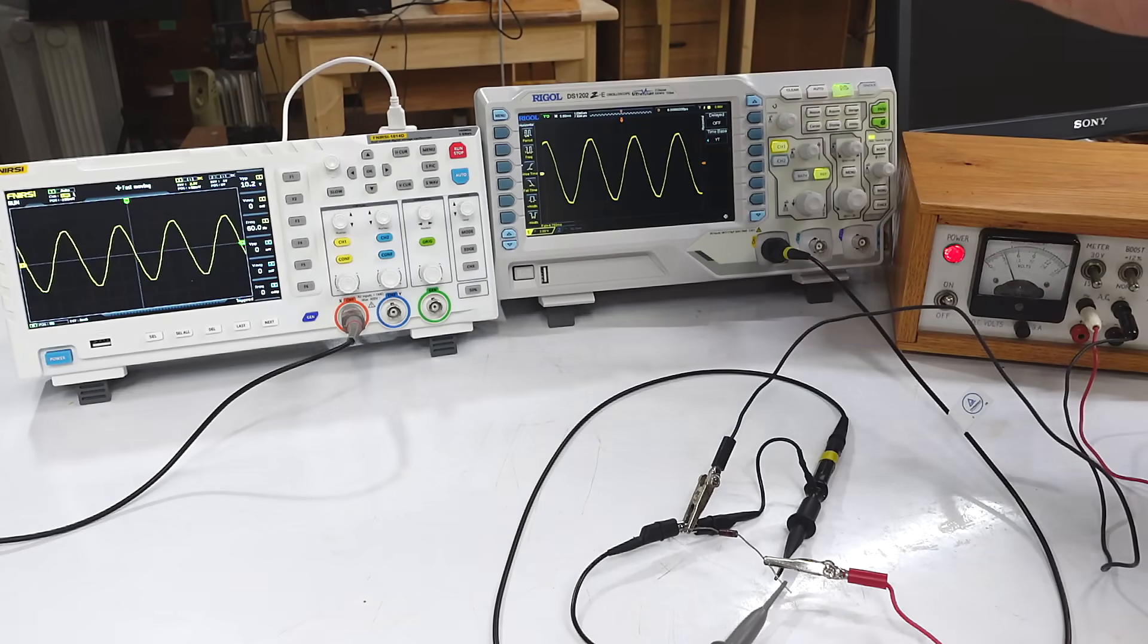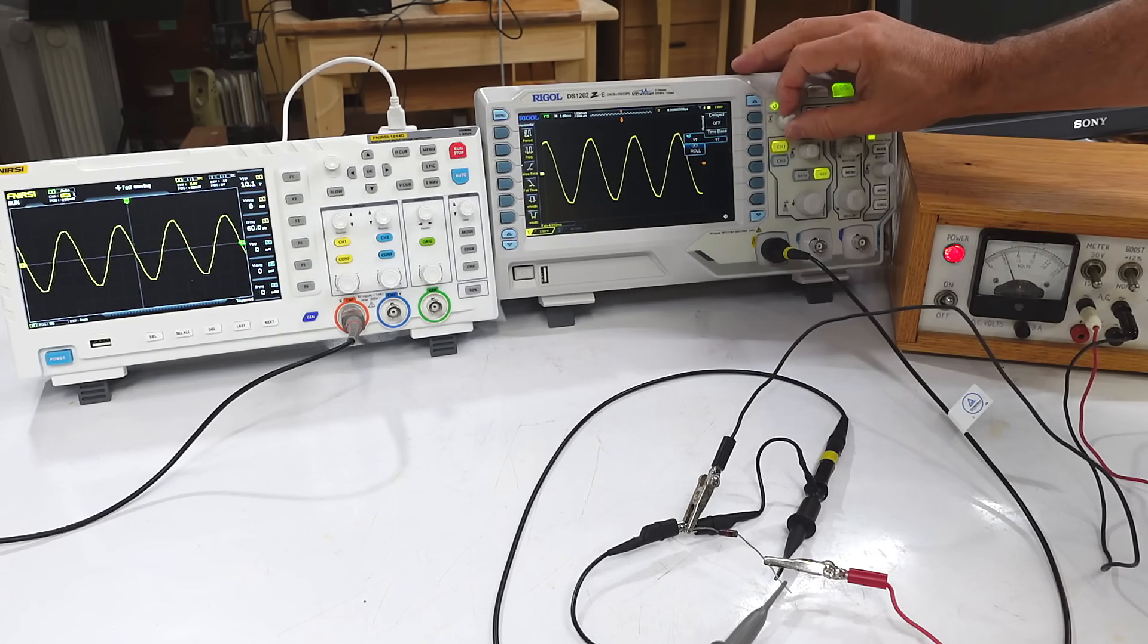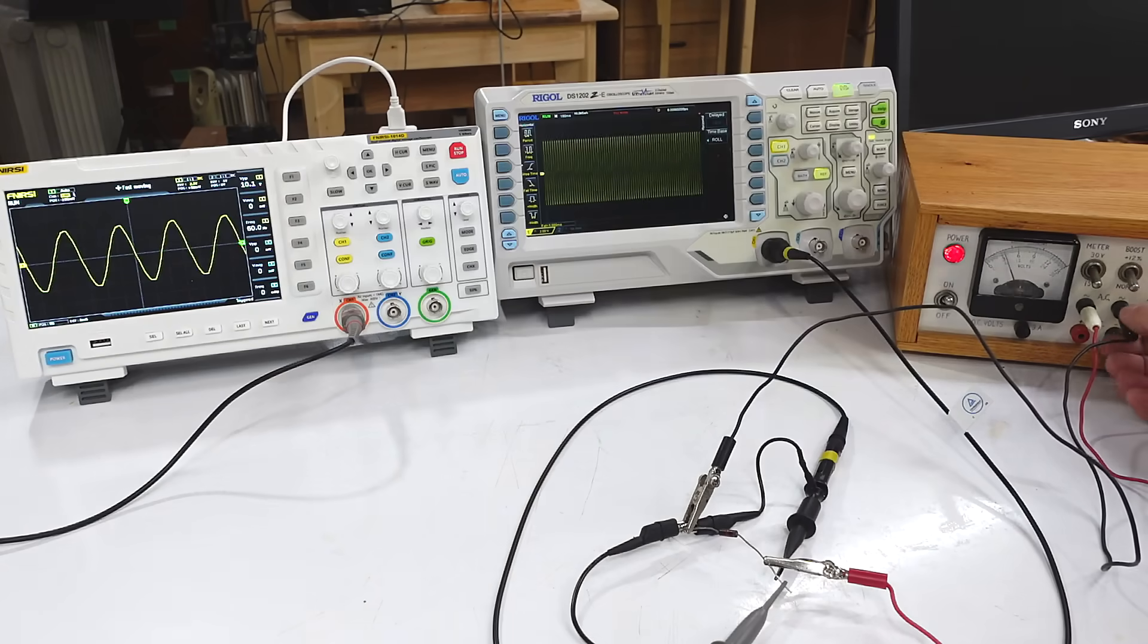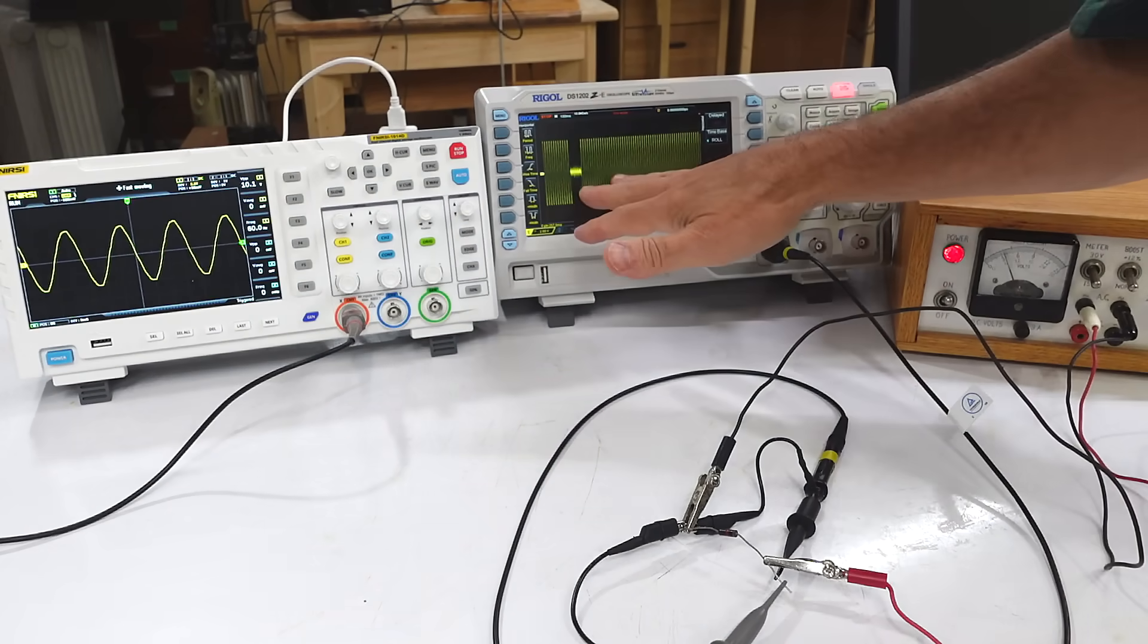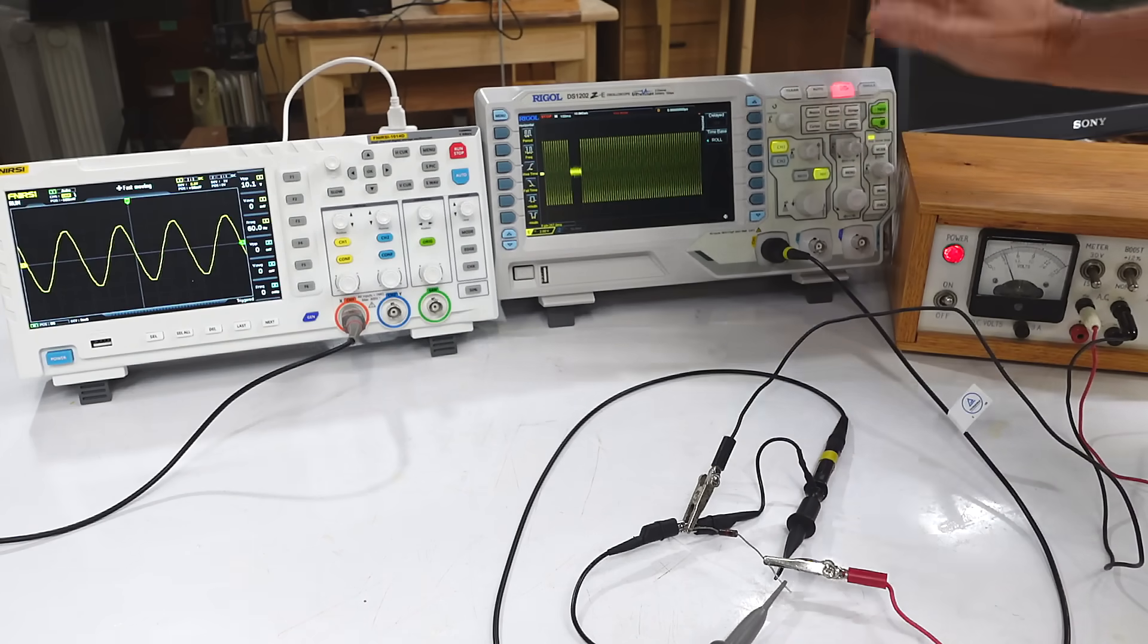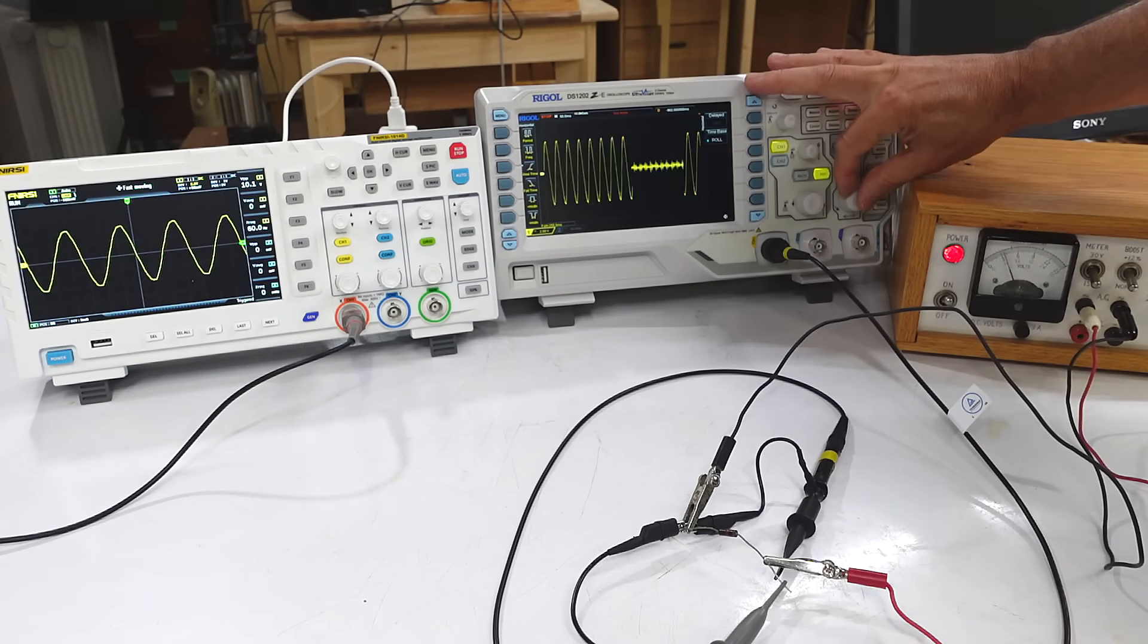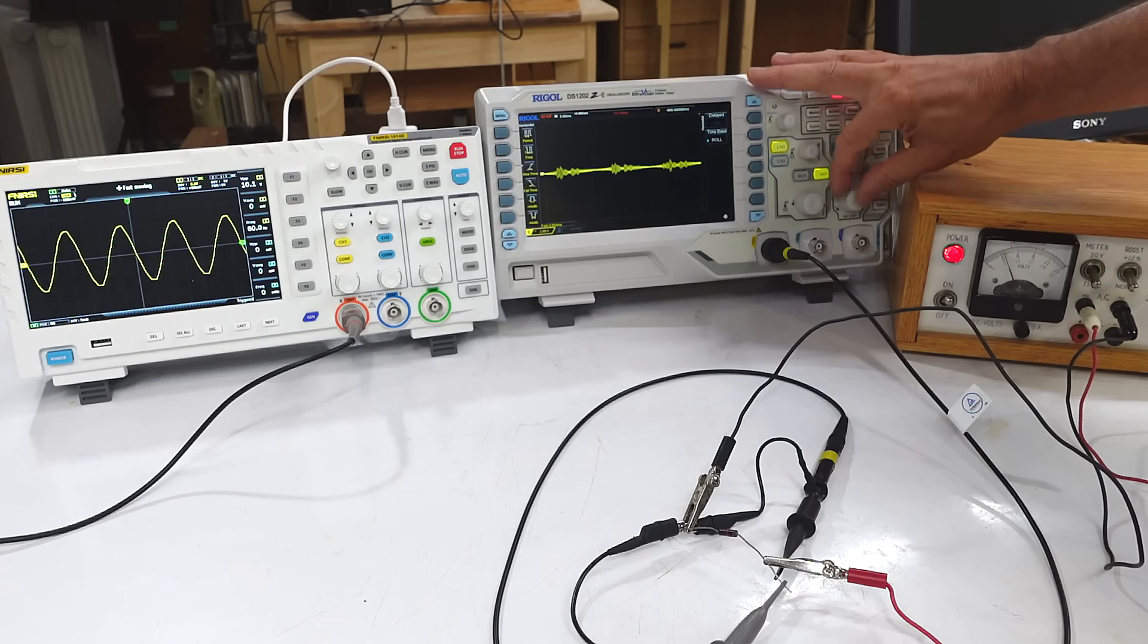But for that sort of thing, what's really useful is something called roll mode. So I'll switch this into roll mode, where the signal just kind of scrolls across here. And this one doesn't have that. So now if I've got my glitch, I can react fast enough to hit the button on here to see that. Because a lot of times the glitch may be something that I can't trigger on. So I have to manually stop it.